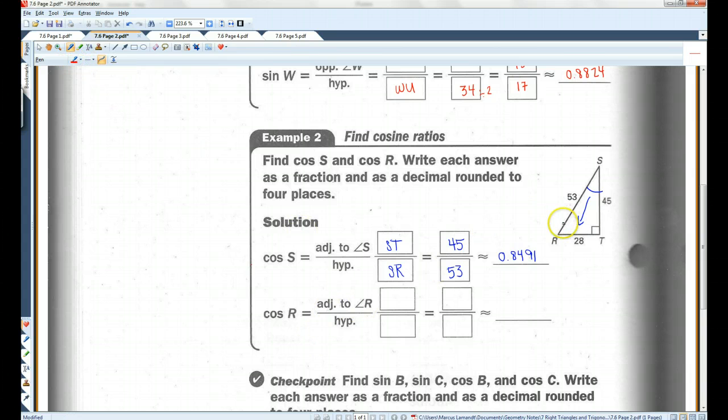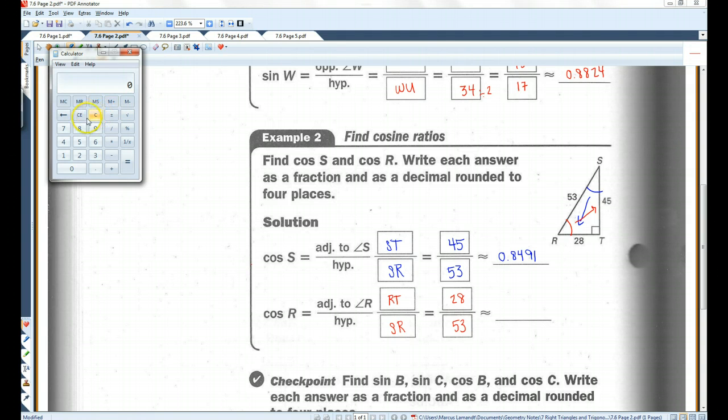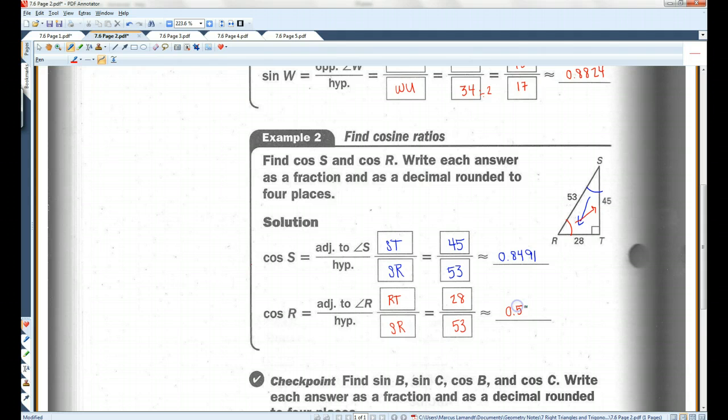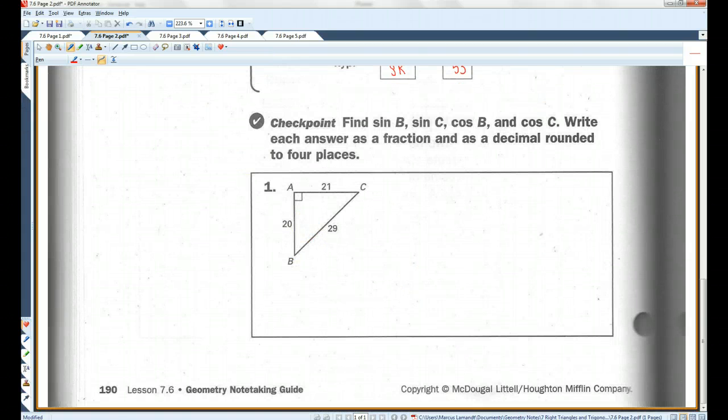Cosine of R. In this case, 45 is the opposite, so 28 is the adjacent. That's T-R, or R-T. R-T is 28, this is still 53. Let's pull the calculator out again. 28 divided by 53 equals 0.5283. I'll let you guys do this checkpoint. Let's go on to page 3.